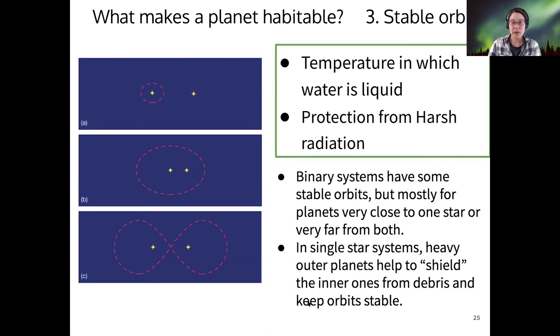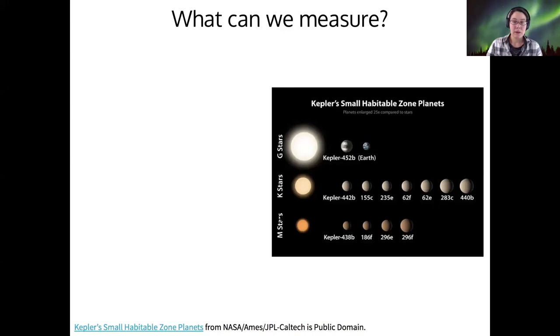Other things like measuring the atmosphere, you could do with spectroscopy. Actually, this point is a really good point. So even in single star systems, if you have very massive outer planets like our Jupiter and Saturn, that can help to shield the inner planets from debris in the early stages of solar system formation, and that can also help to keep the orbits of the inner planets stable. So it's nice that we have Jupiter and Saturn for that reason.